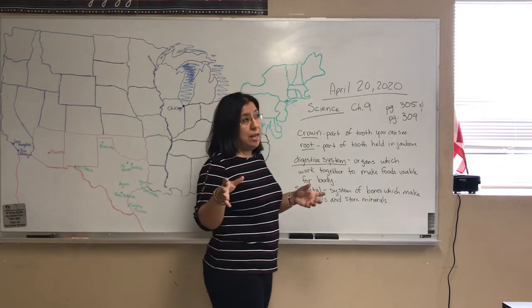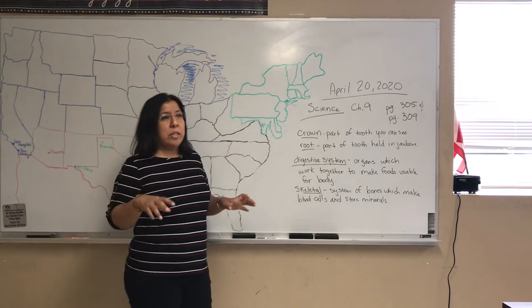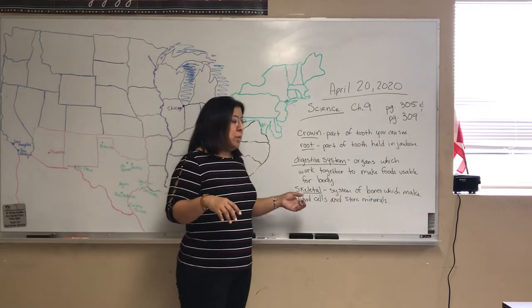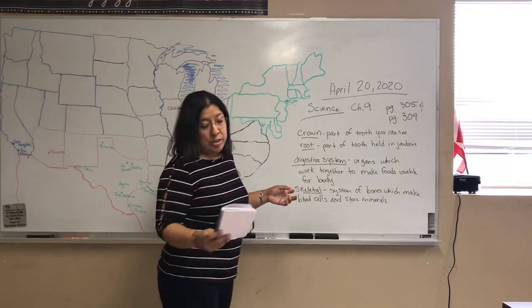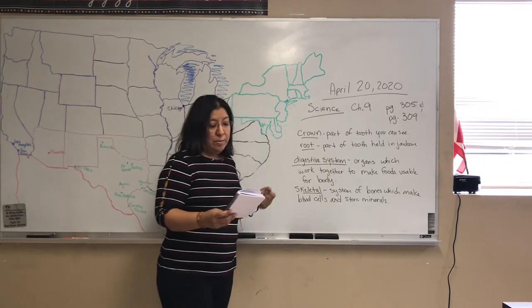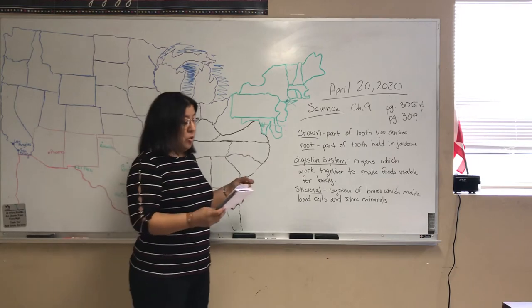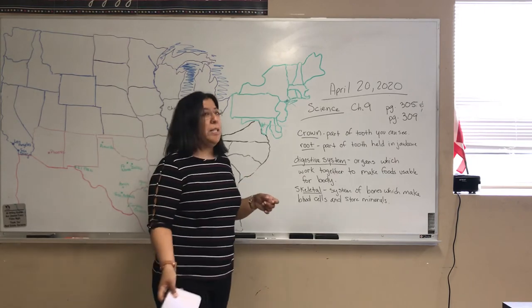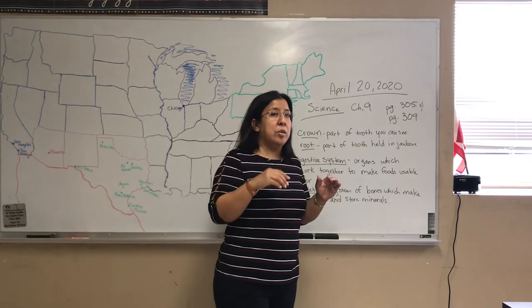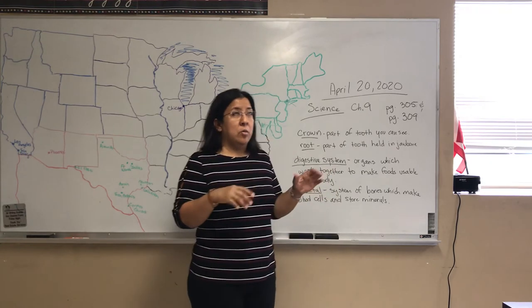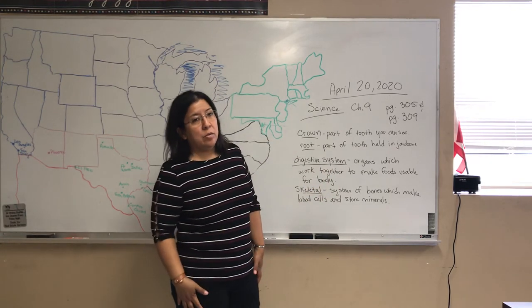The skeletal system is the bones working together as a group. The other couple of words we needed to go through: involuntary muscles — make sure you learn that one. Make sure you know what a joint is. It's where two bones come together to move or help move bones or a body part, like your legs, your hands, your arms.